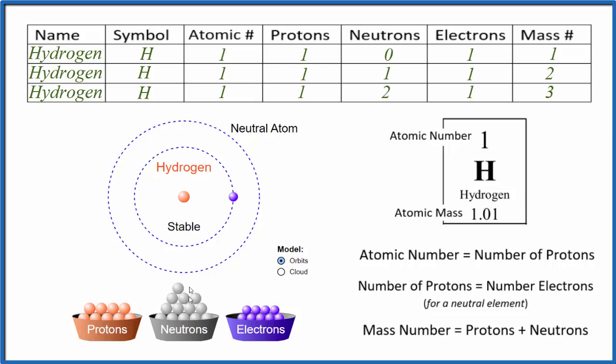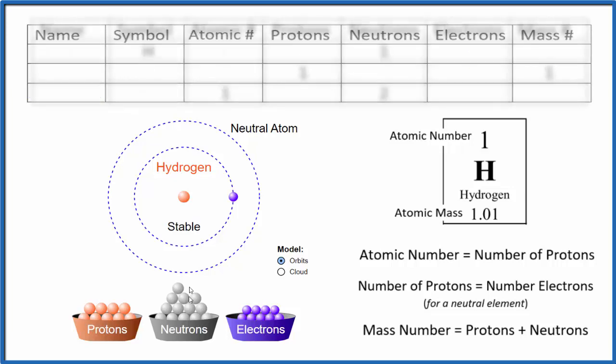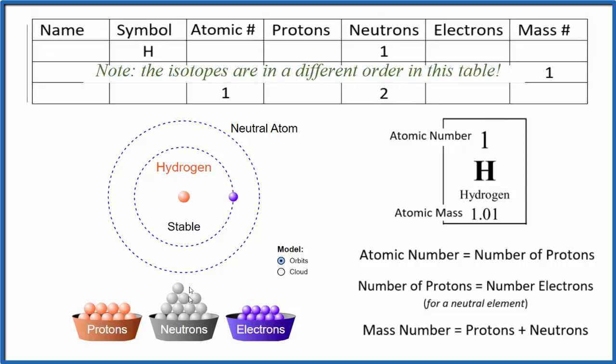So now that you know about the protons, neutrons, electrons, and the mass number for hydrogen, pause and complete this table. This will lock it into your memory.